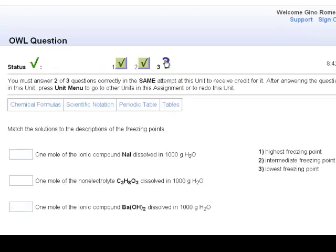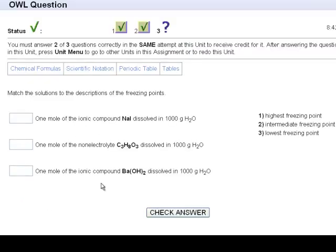Let's see if one more shows anything different. So one mole, one mole. Ionic compound, N is 2. Molecular, N is 1. Ionic compound, N is 3. Two hydroxides and one barium.